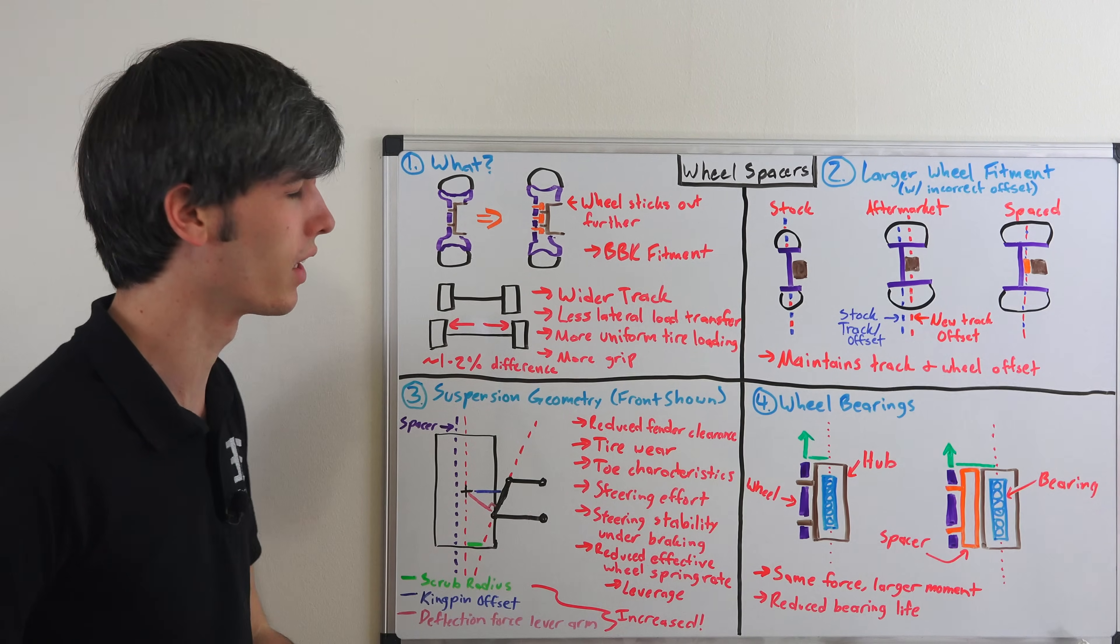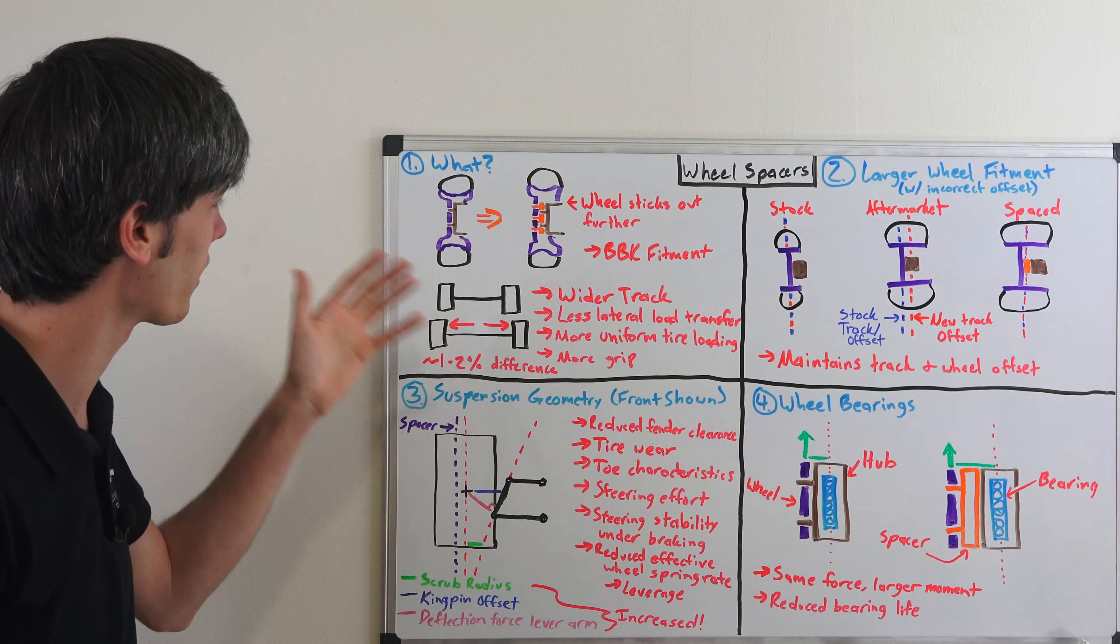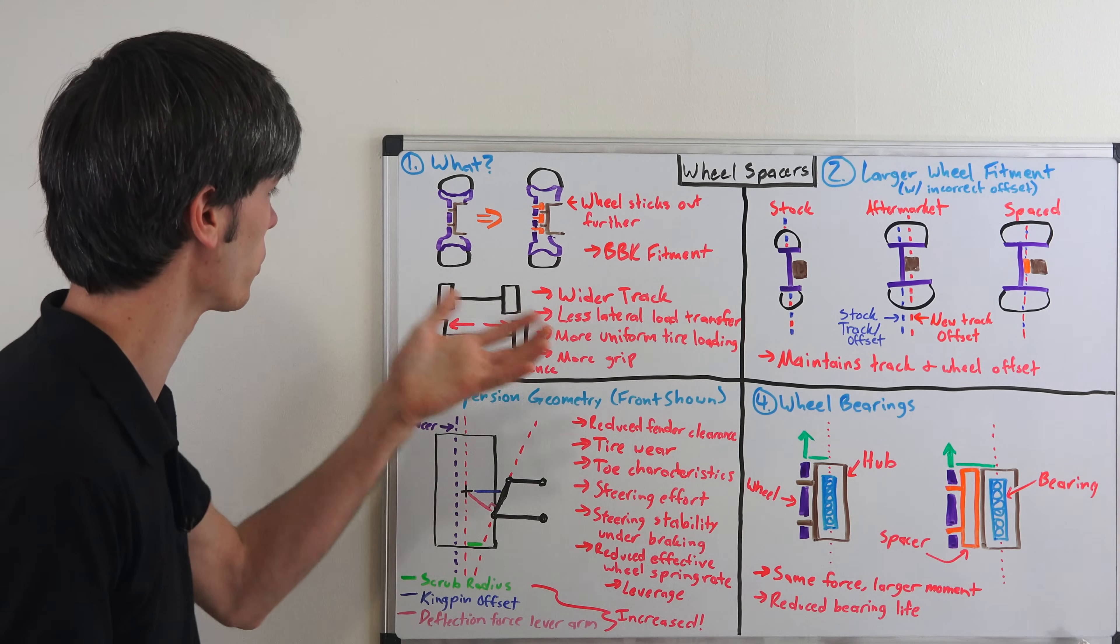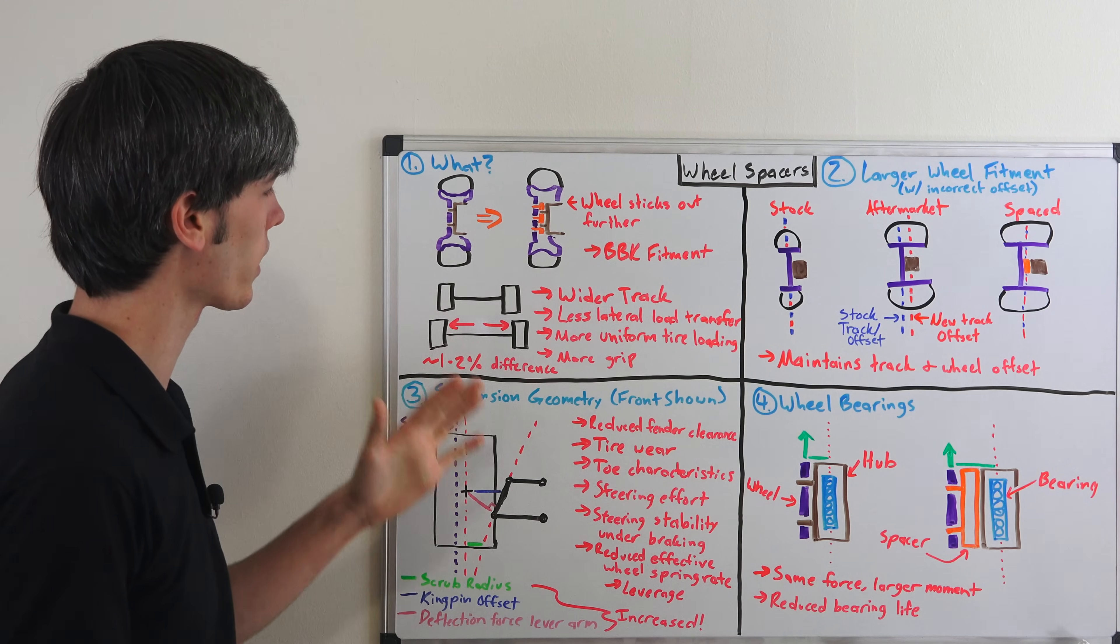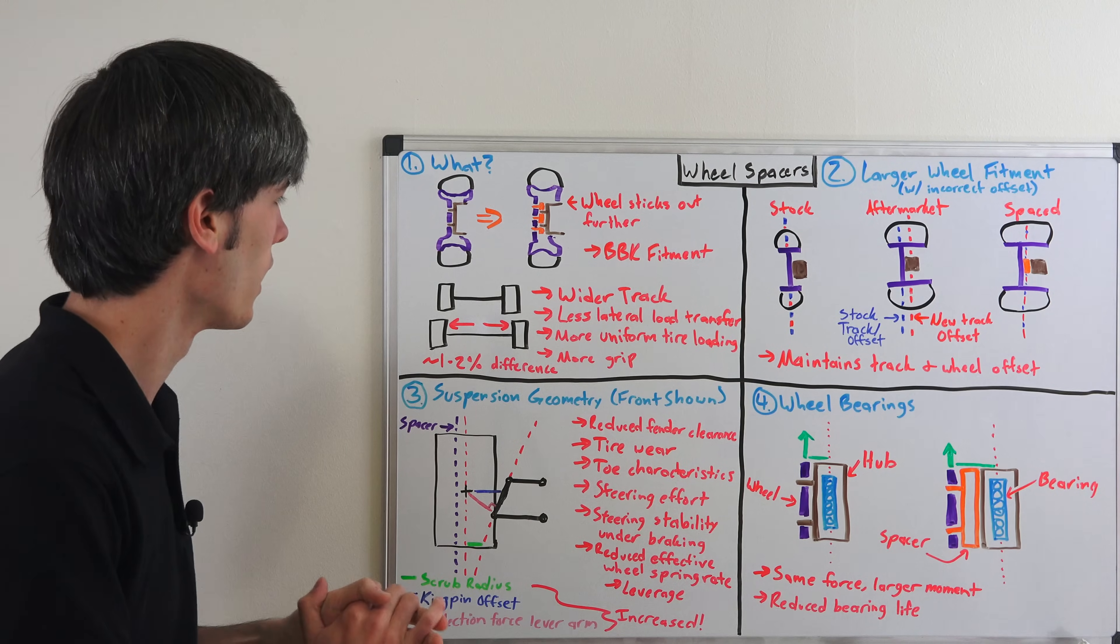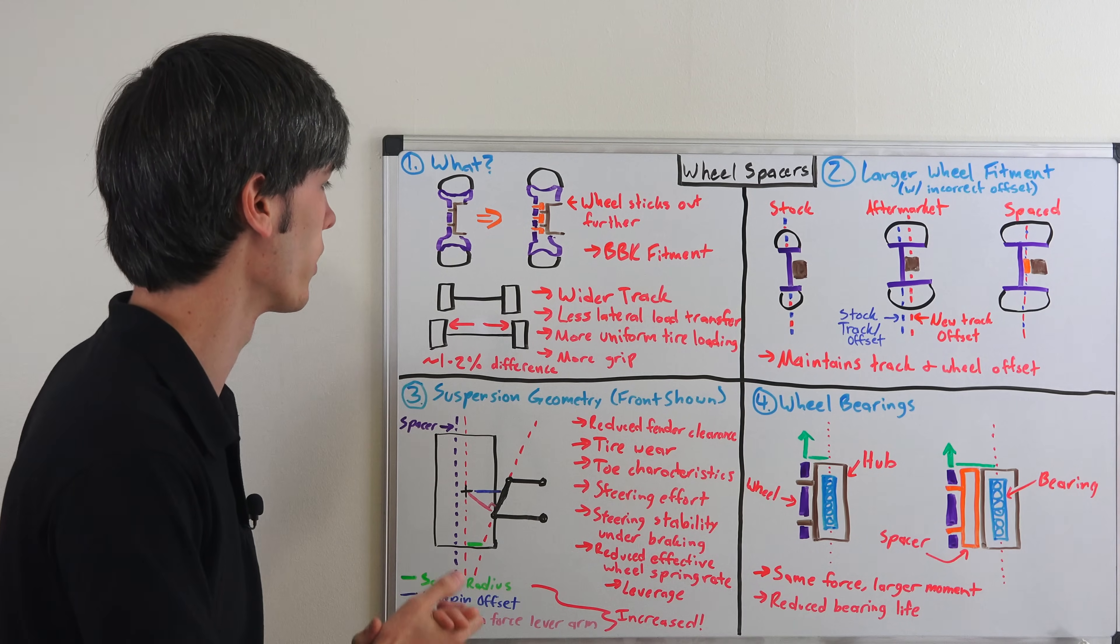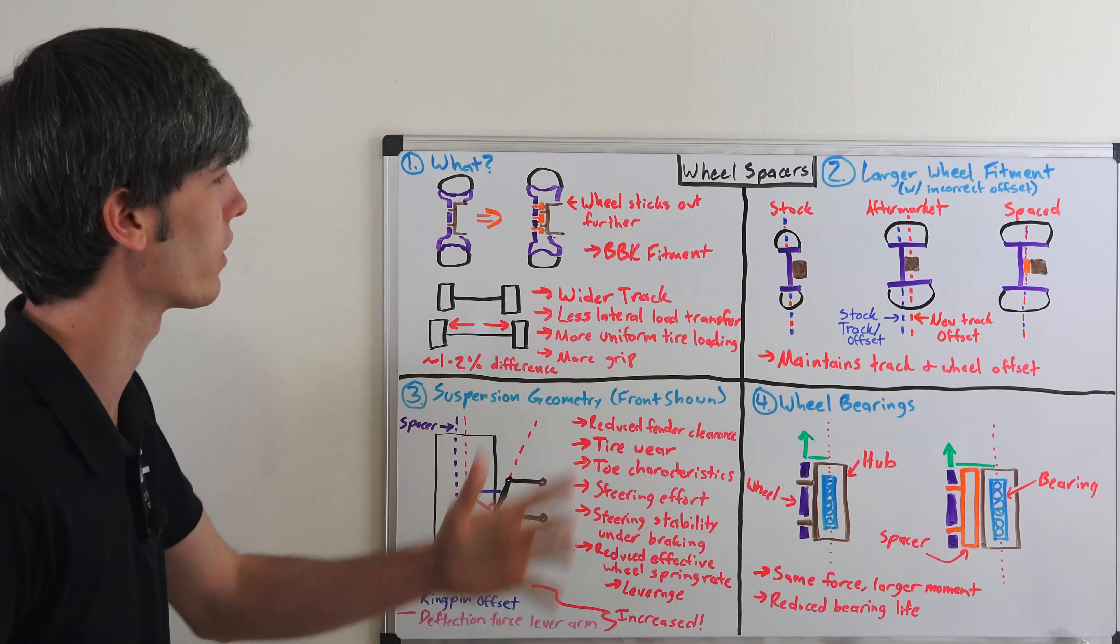Now, I say this as a benefit, but the effects are going to be extremely small. I was doing some math and I will have an example in the future where I'll actually do the math on an actual car and show the difference it can make, but it looks like it's about 1% to 2% less load transfer in kind of an extreme scenario. So it's not going to be a huge benefit, but a benefit nonetheless of having a wider track.